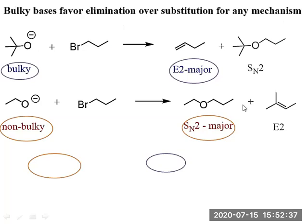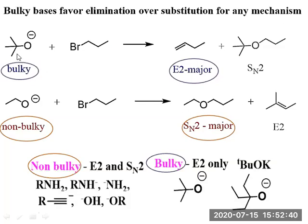A bulky group cannot act as a nucleophile; it acts as a strong base and gives the elimination product. A non-bulky alkoxide like ethoxide can act as a nucleophile and attack to give the substitution product as the major product. With a bulky group, E2 elimination is the major product and SN2 is minor; with a non-bulky group, substitution is major and E2 is minor.